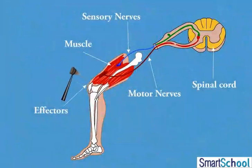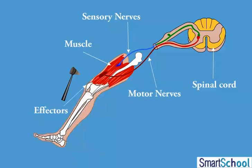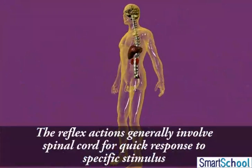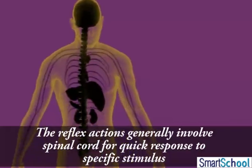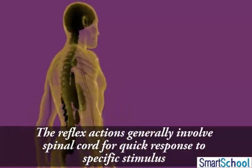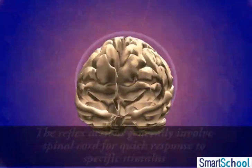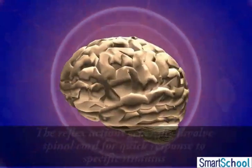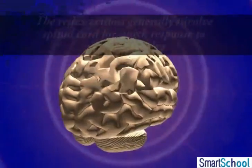The spinal cord then sends the impulse via motor nerves to effectors, i.e., muscles or glands. Reflex actions generally involve the spinal cord for a quick response to a specific stimulus; otherwise, the thinking process of the brain may take time and delay the response, which may harm the animal.